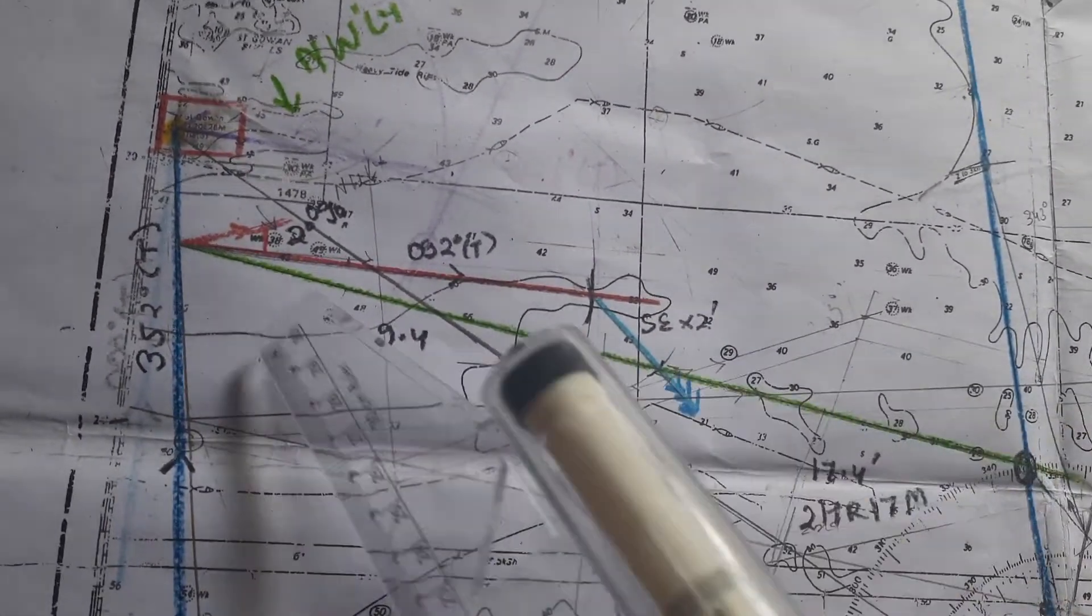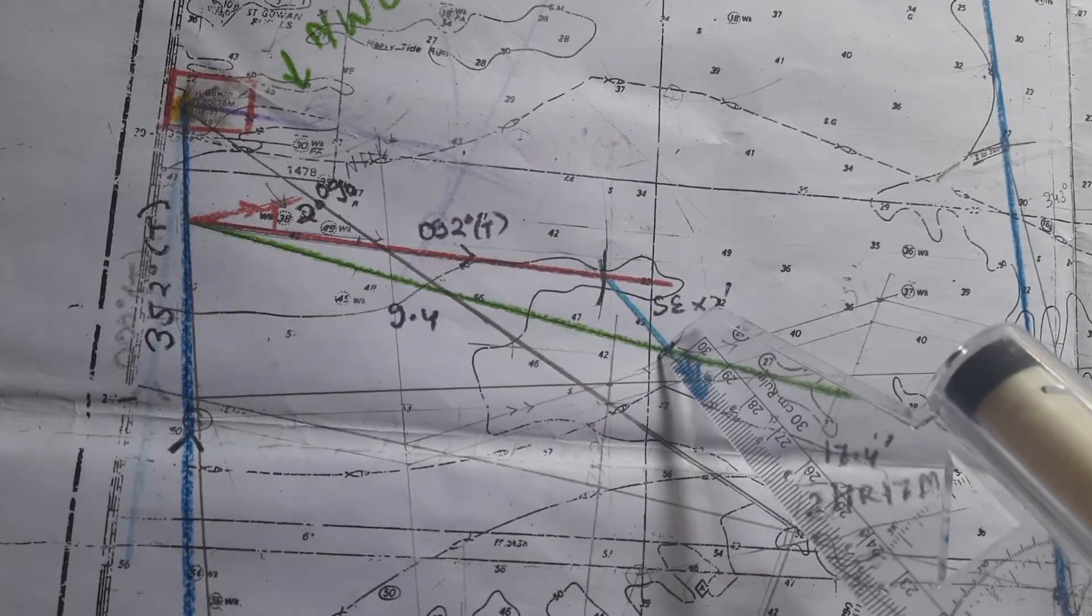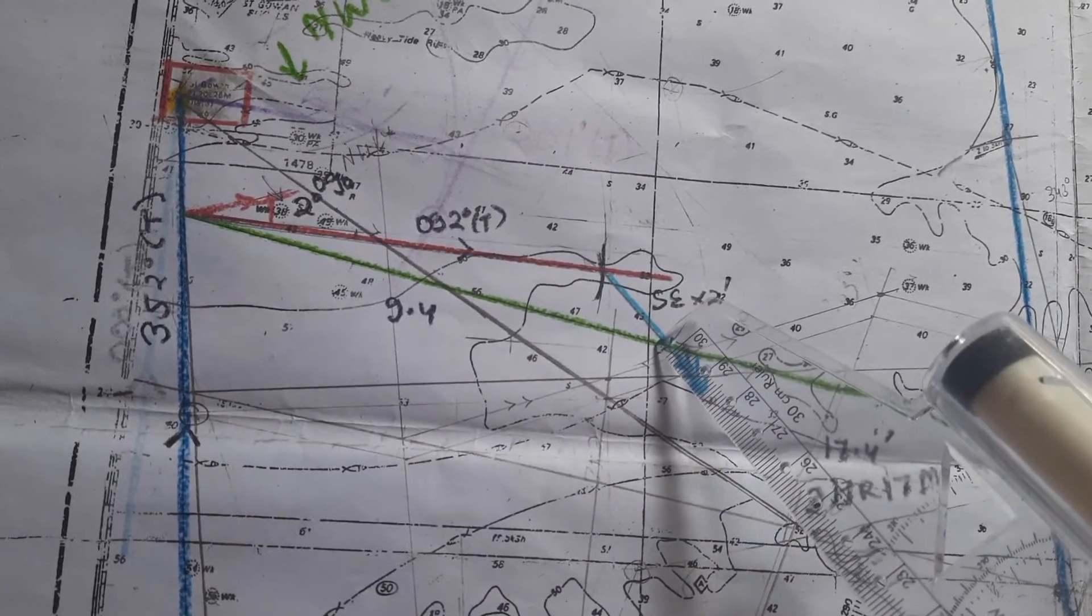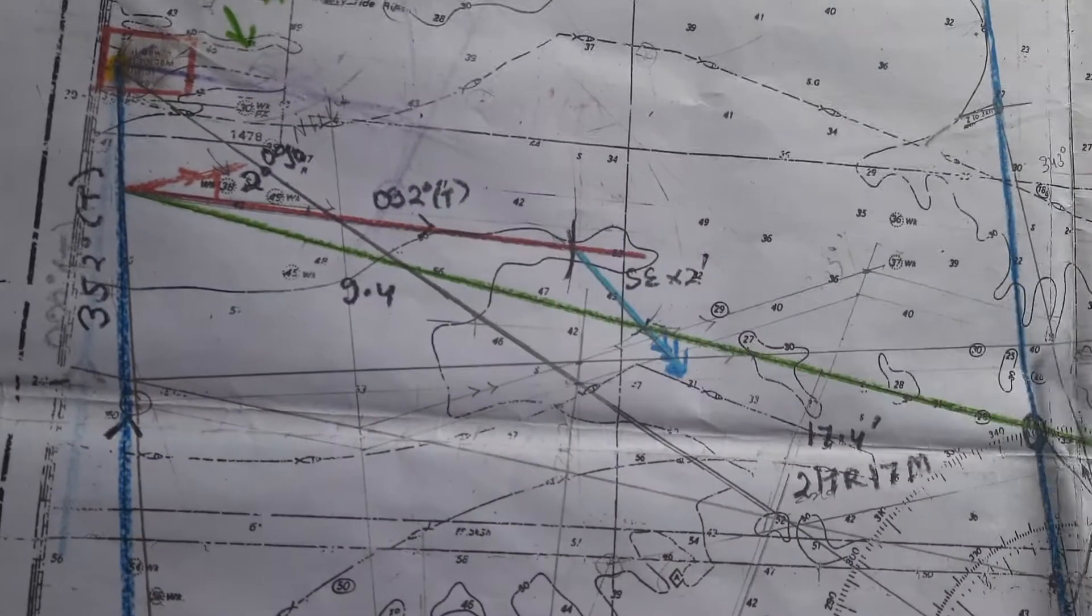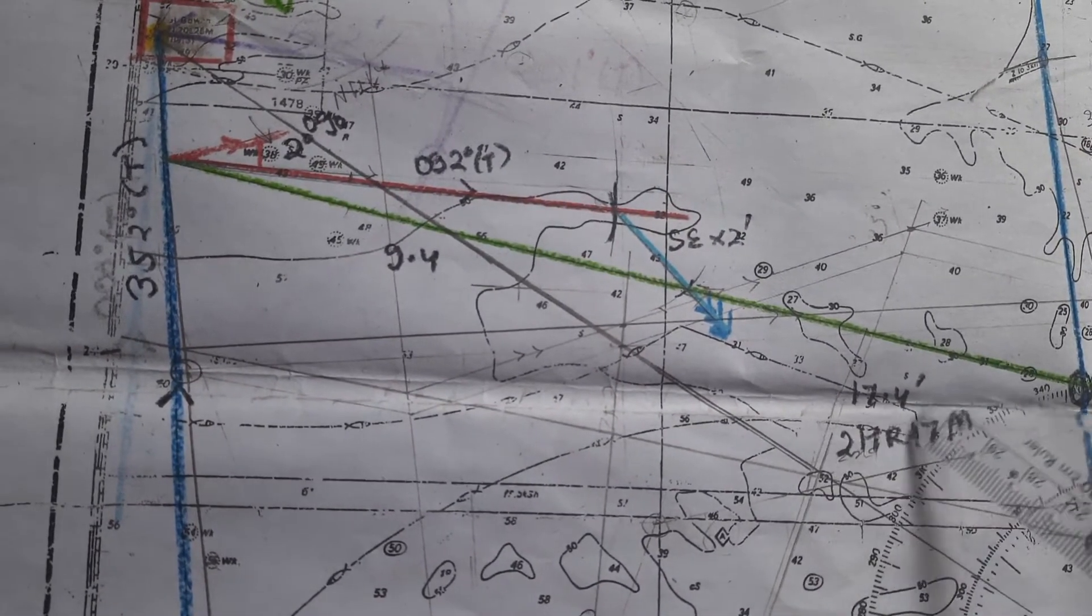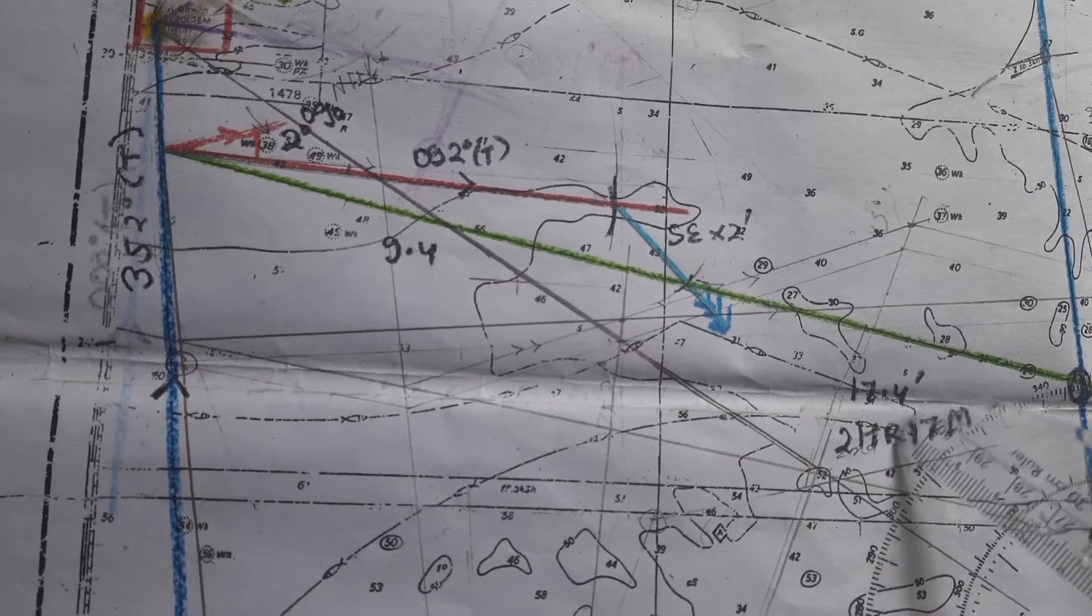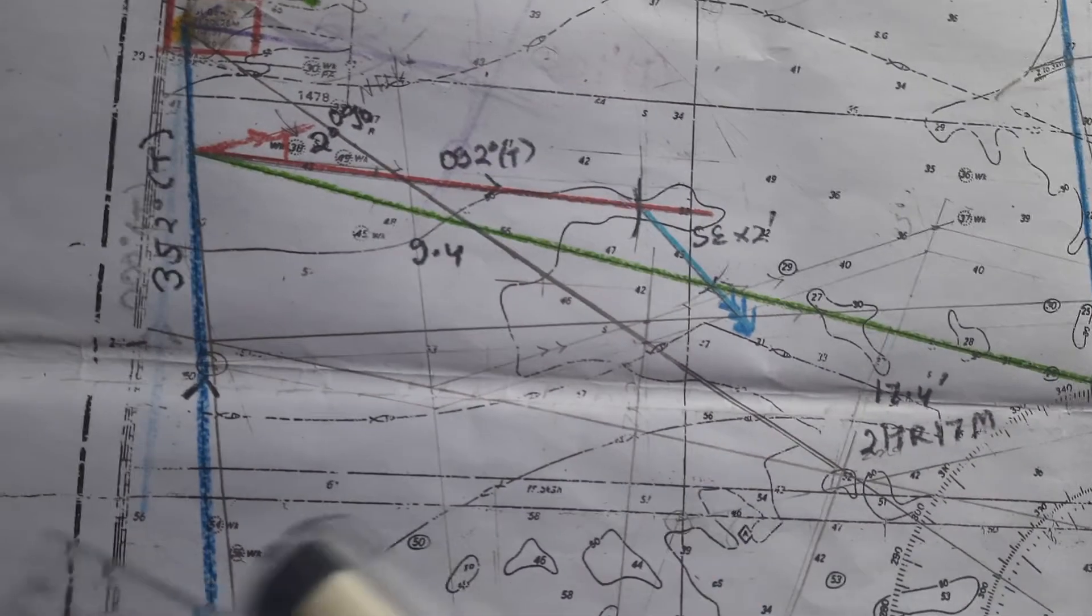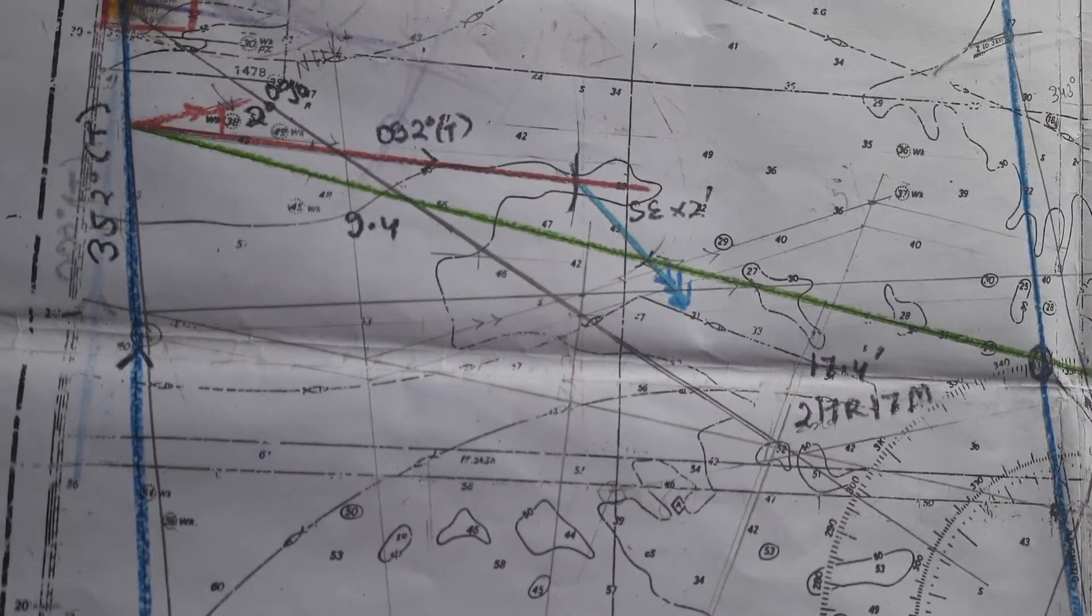Then we are asked the time for alteration. So we measure this course made good, this is 9.4 miles, so 9.4 knot speed. This total distance from here to here is 17.4. So after two hours 17 minutes the vessel will have to alter from the initial bearing.